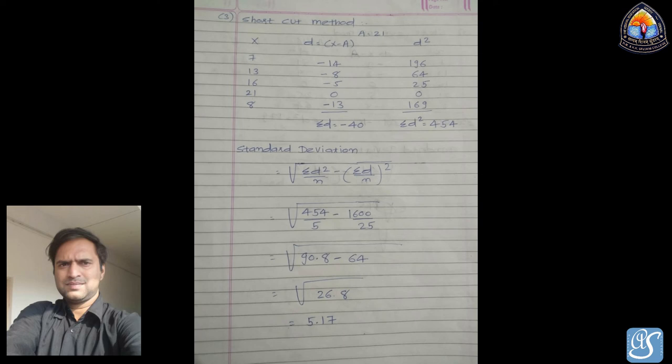Σd = −14 − 8 − 5 + 0 − 13 = −40, and Σd² = 196 + 64 + 25 + 0 + 169 = 454. The standard deviation formula for the shortcut method is √(Σd²/n − (Σd/n)²) = √(454/5 − (−40/5)²) = √(90.8 − 64) = √26.8 = 5.17.